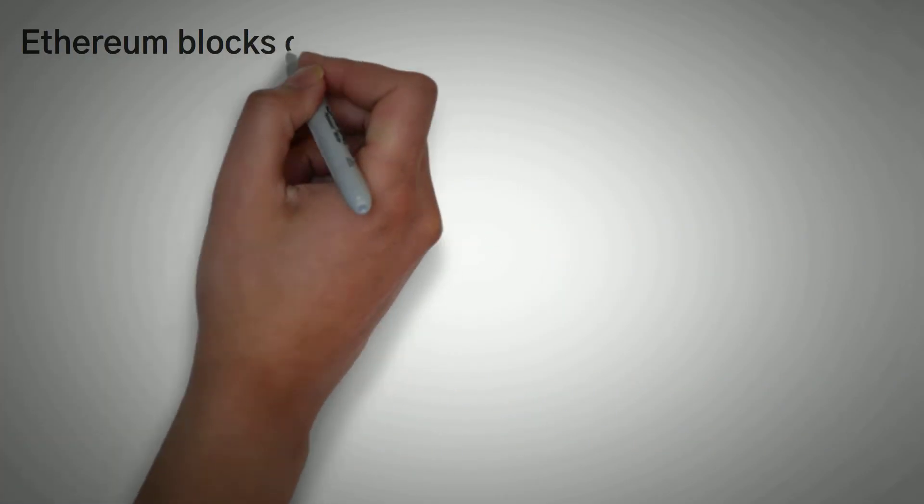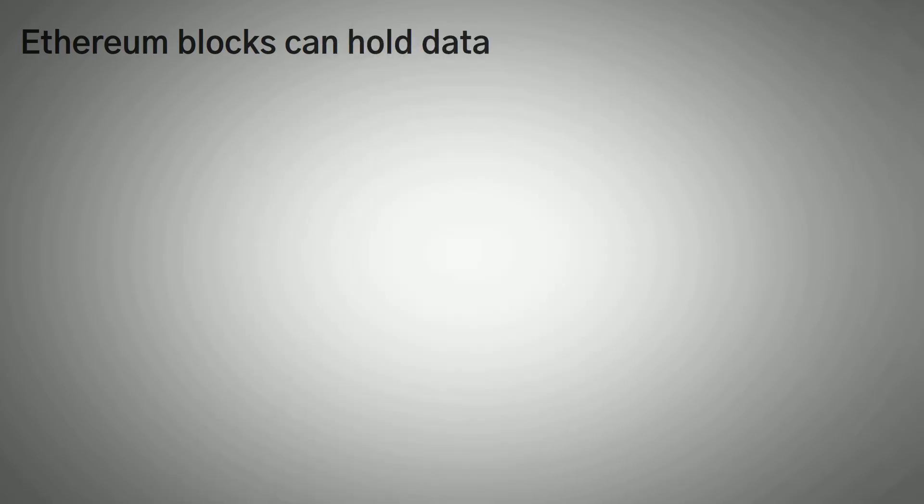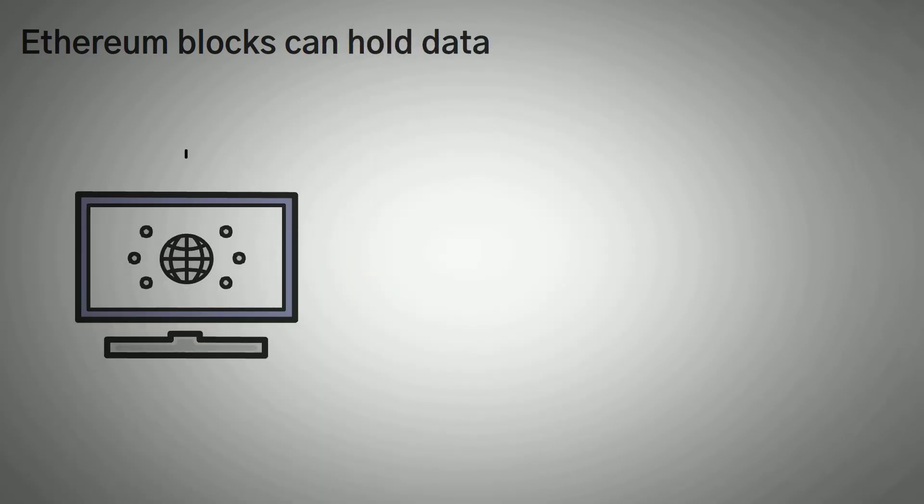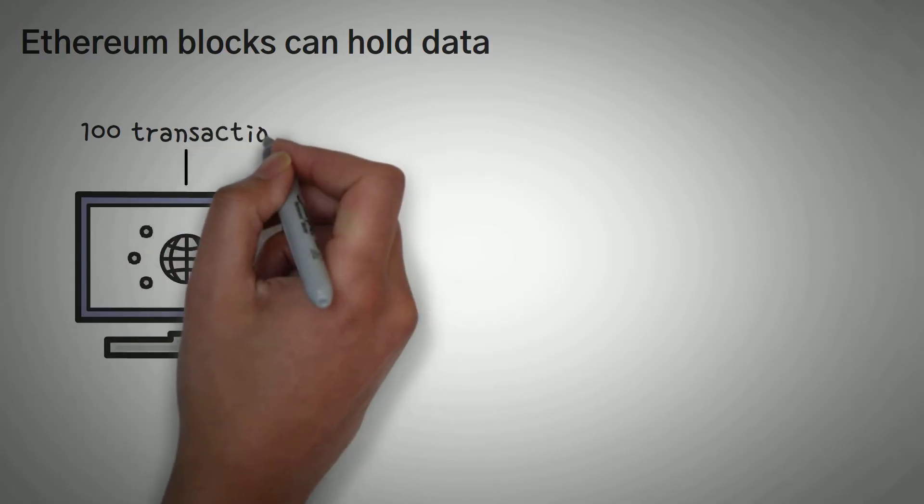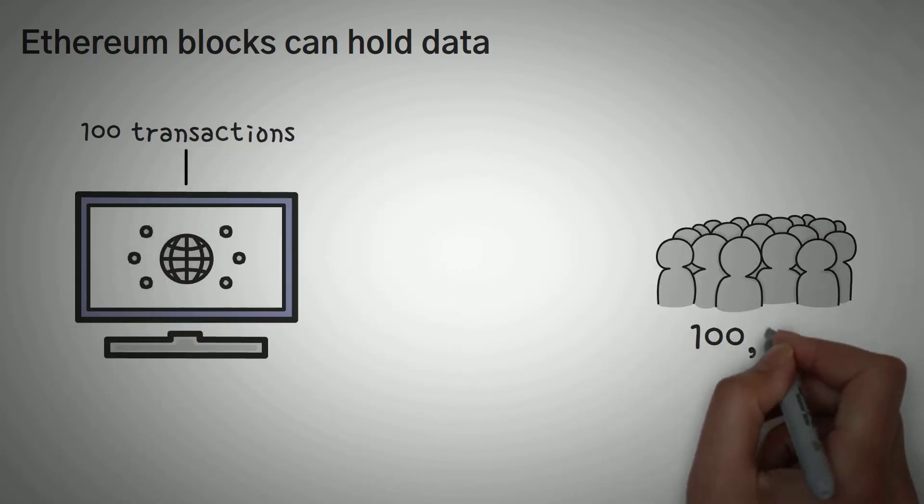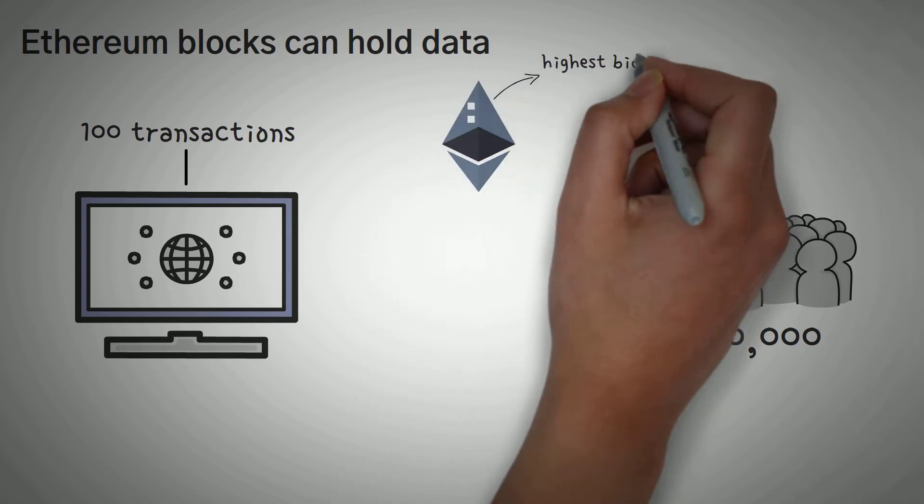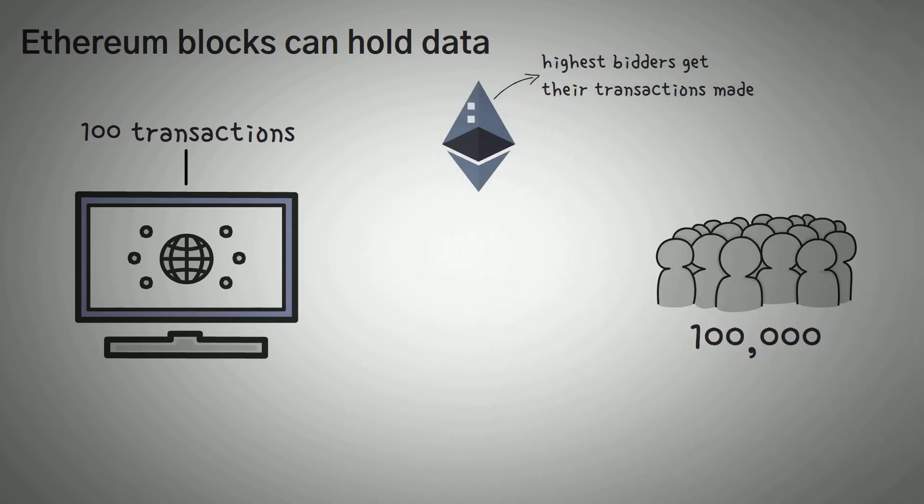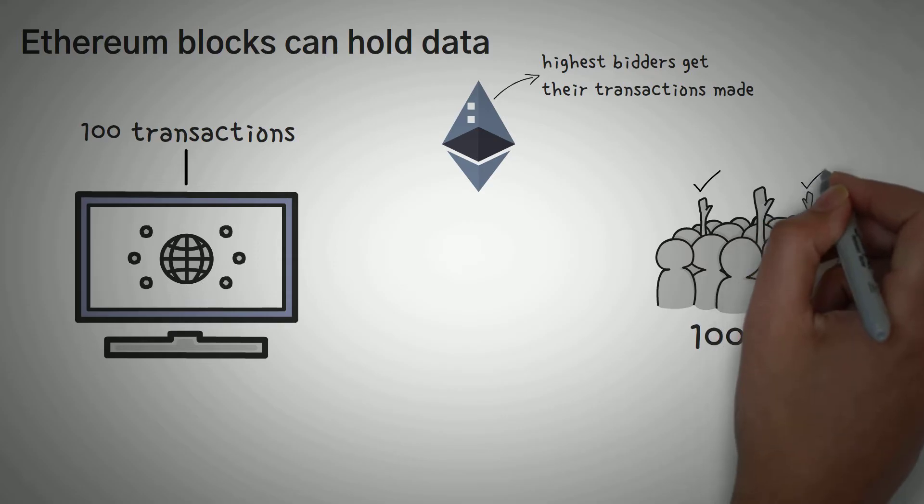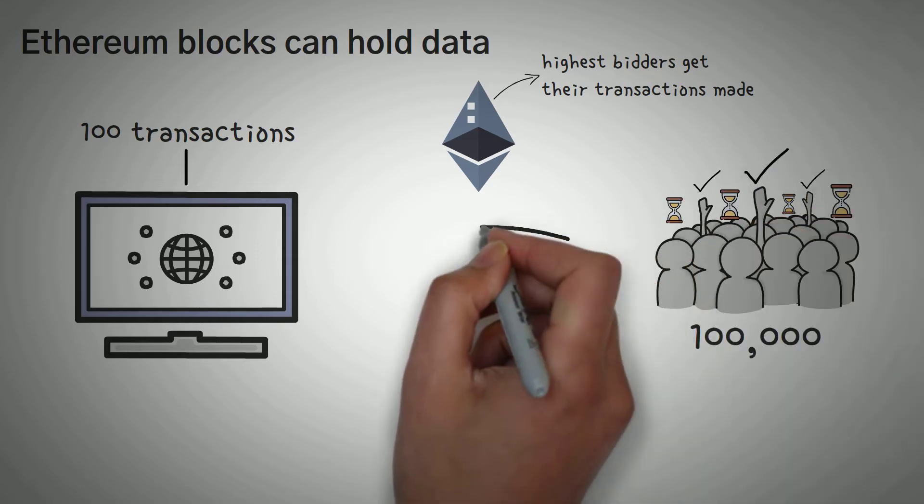First we need to know that Ethereum blocks can only hold so much data. For the purposes of this video, let's say they can only do 100 transactions. This means if there are 100,000 people who want to make transactions, Ethereum will pick the top 100 transactions that include the highest fee and use those. Otherwise the other transactions will have to wait.